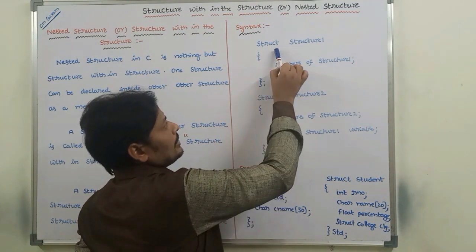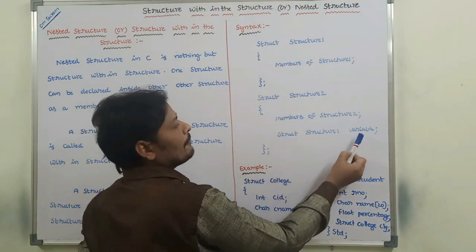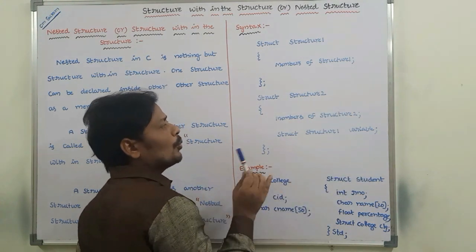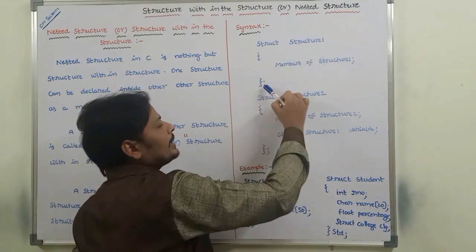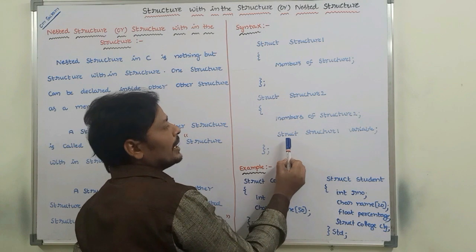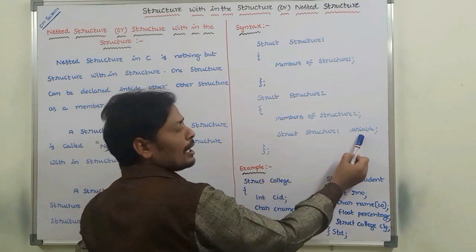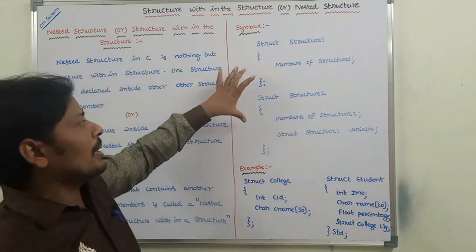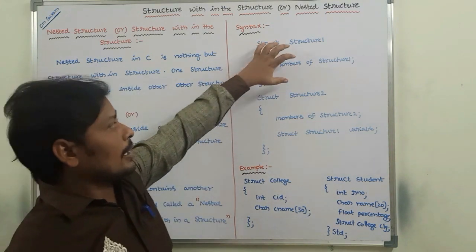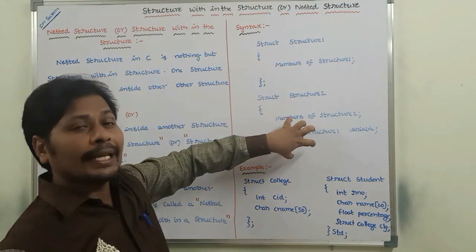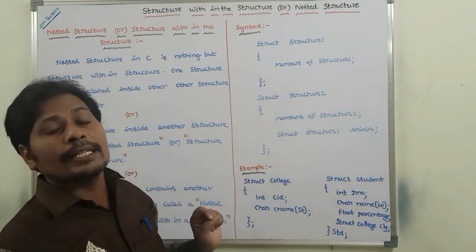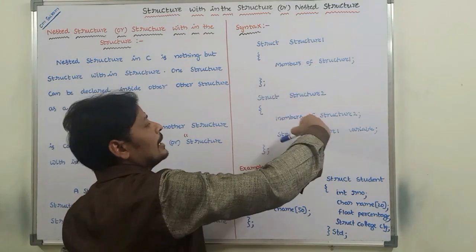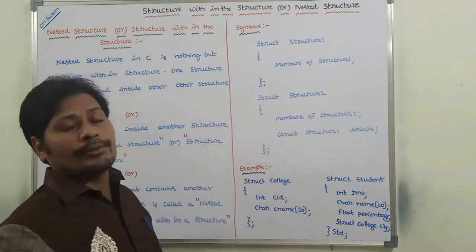So struct structure1, with the variable we have created for this structure, means this entire structure can be declared as one data member in structure 2. Then it can be called a structure declared inside another structure as a data member — this is called structure within the structure.